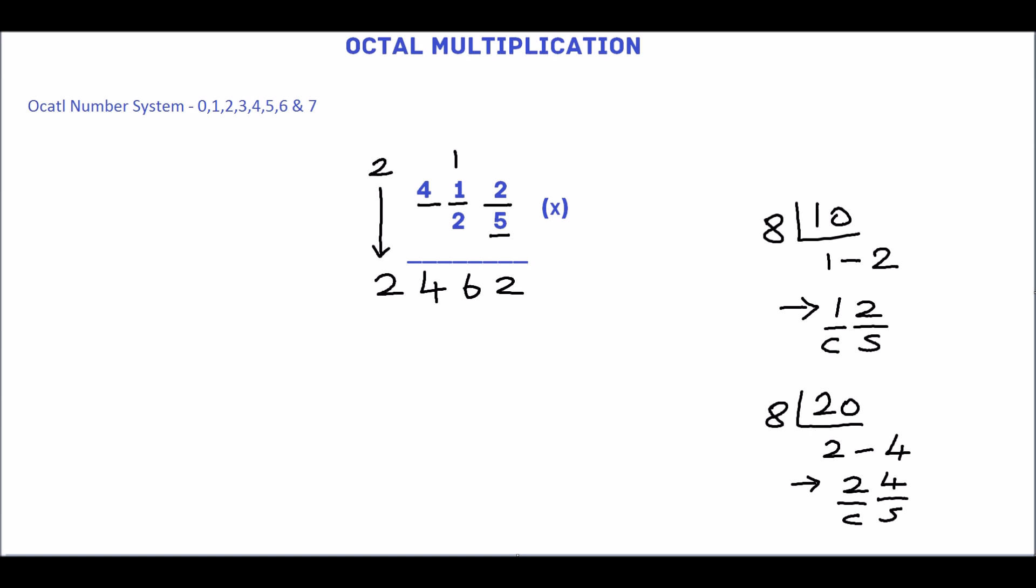Next, multiply 412 by 2. 2 multiplied by 2 is 4. 2 multiplied by 1 is 2. 2 multiplied by 4 is 8.